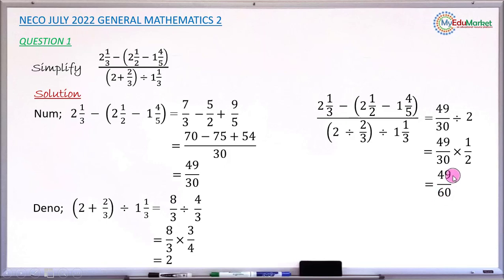The final answer is 49 over 60. You cannot simplify this fraction any further, so this is the end of the solution. With this, we have answered the question. Let me now quickly share how this question is marked in the NECO July 2022 marking scheme.